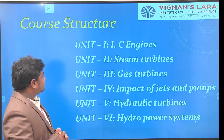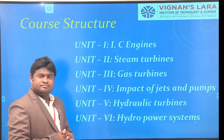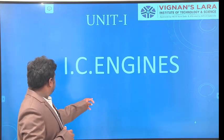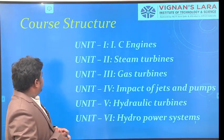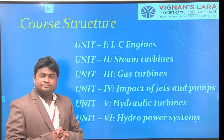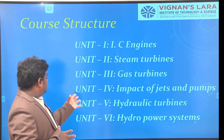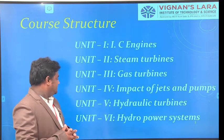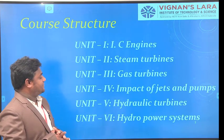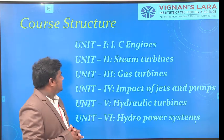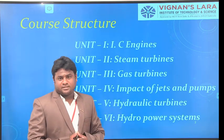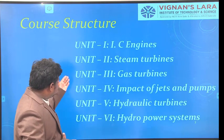The course structure covers six units. Unit one is IC engines, meaning internal combustion engines. The second unit is steam turbines. The third unit is gas turbines. The fourth unit is impact of jets and pumps. The fifth unit is hydraulic turbines, followed by the sixth unit, hydro power systems. Units one, two, and three belong to thermal prime movers.